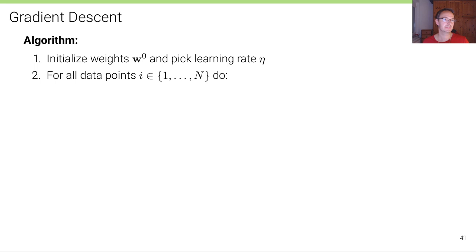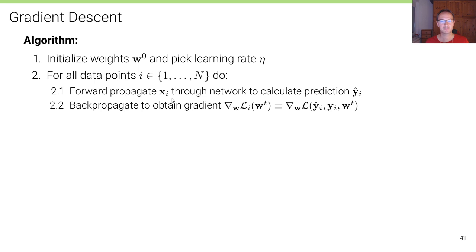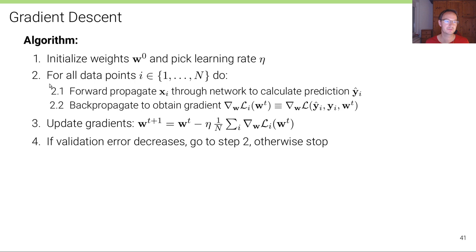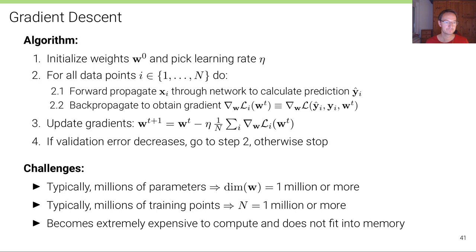The gradient descent algorithm: initialize weights to random values using clever techniques such as Xavier or He initialization, pick a learning rate η, then for all data points forward-propagate x through the network to get predictions, backpropagate to obtain gradients, and update weights using the gradient update rule. If the validation error decreases, repeat; otherwise consider training converged.